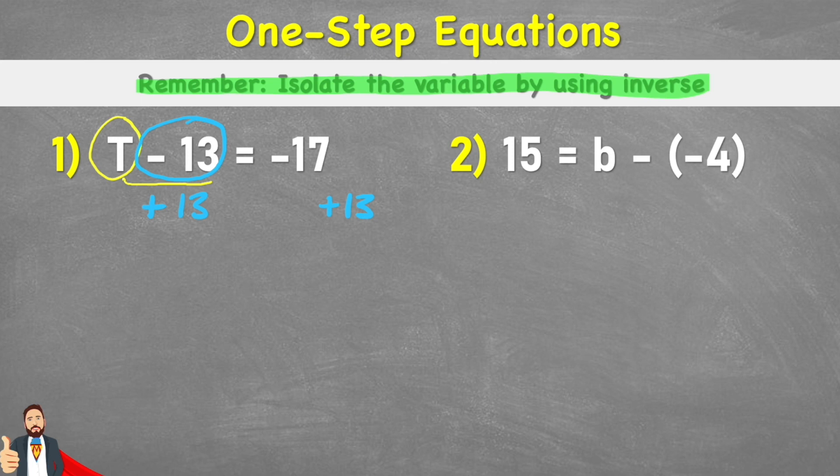Okay, and now I can begin to solve my equation. So looking at this first left-hand side, my negative 13 plus my positive 13 cancel themselves out and equal 0. So I'm left with just t on its own. So therefore, t equals negative 17 plus 13.